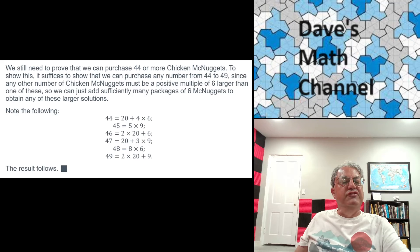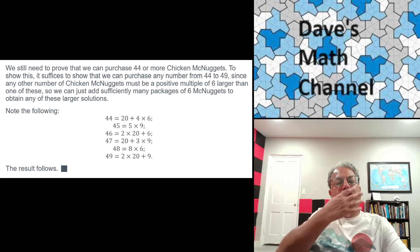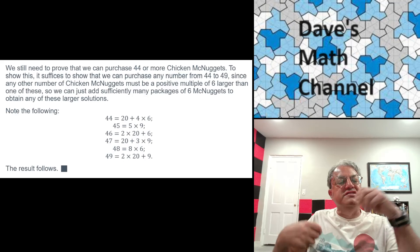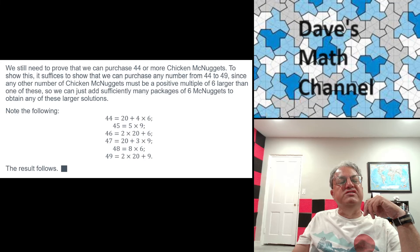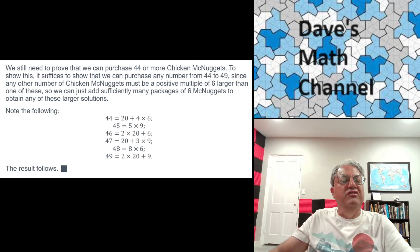So we just have to show that we can do 44 through 49. Well, I've written them out. You can get 44 as a pack of 20 and 4 packs of 6. You can get 45 as 5 packs of 9. 46 is two 20 packs and a 6 pack. 47 is 1 pack of 20 and 3 packs of 9. 48 is 8 packs of 6. And 49 is 2 packs of 20 and a pack of 9. Voila.